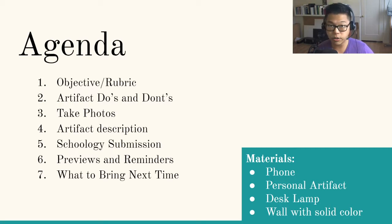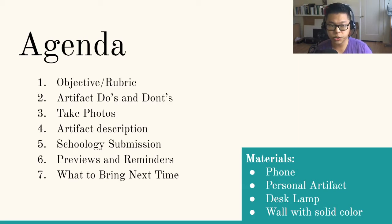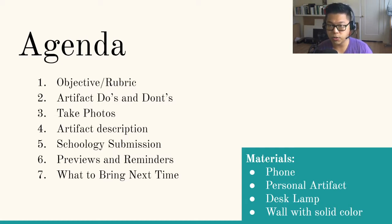The materials you're going to need are your phone, your personal artifact, a desk lamp, and a wall with a solid color, preferably white. If you don't have a desk lamp anywhere around the house that you can move around, I'm also going to be showing you how to take a picture using the light coming in from a window. You can still get really good results from that, so long as you use a wall as your background to crop out any noise you don't want.